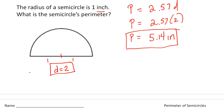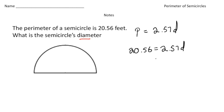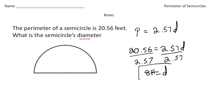Now let's do one more that's a little more complex. This time they give us the perimeter — it says the perimeter of a semicircle is 20.56 feet. What is the semicircle's diameter? This time we know the perimeter and want to solve for the diameter. We use the same formula: perimeter equals 2.57d. Plugging in: 20.56 equals 2.57d. Dividing both sides by 2.57, we get 20.56 divided by 2.57, which gives an answer of 8. So the diameter is 8 feet.